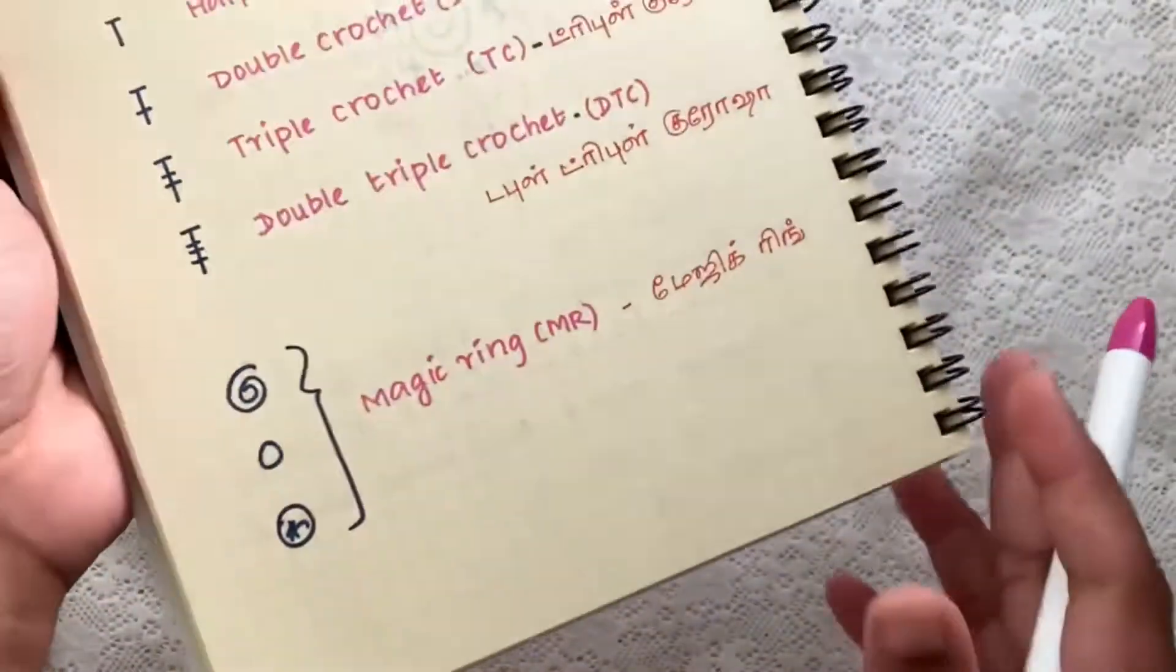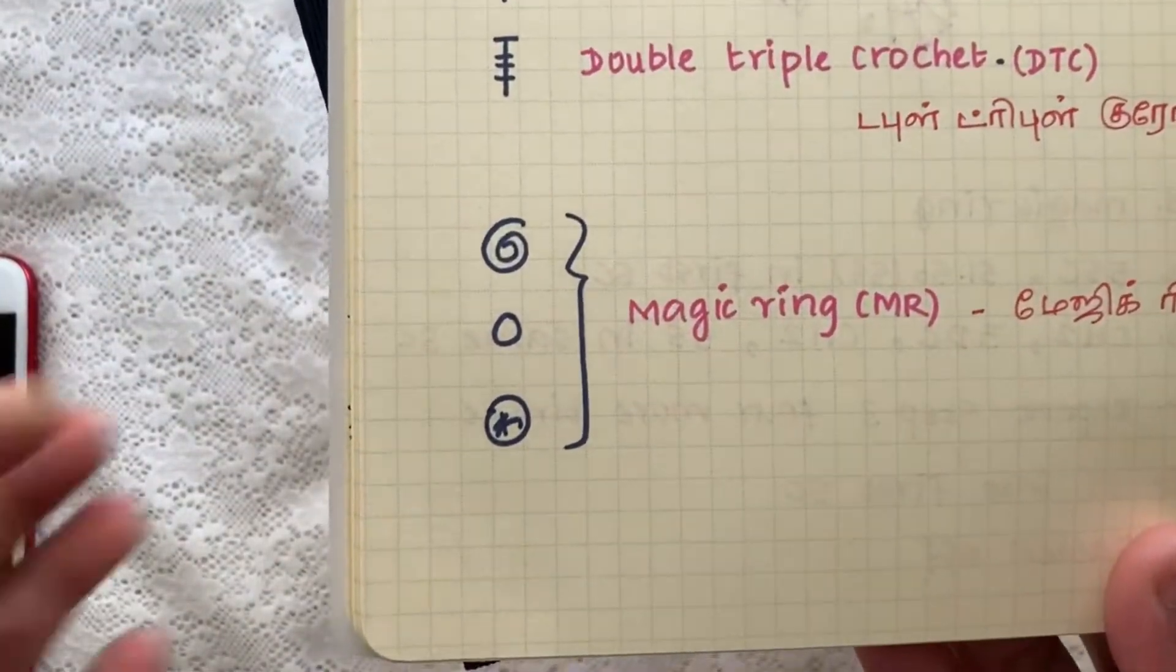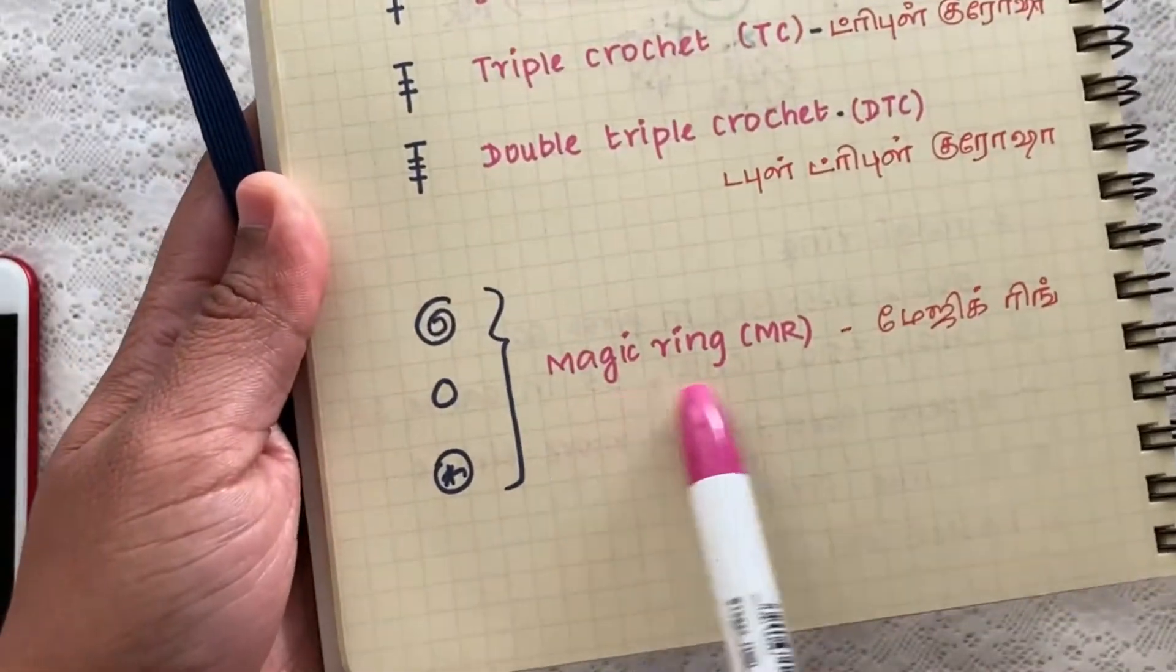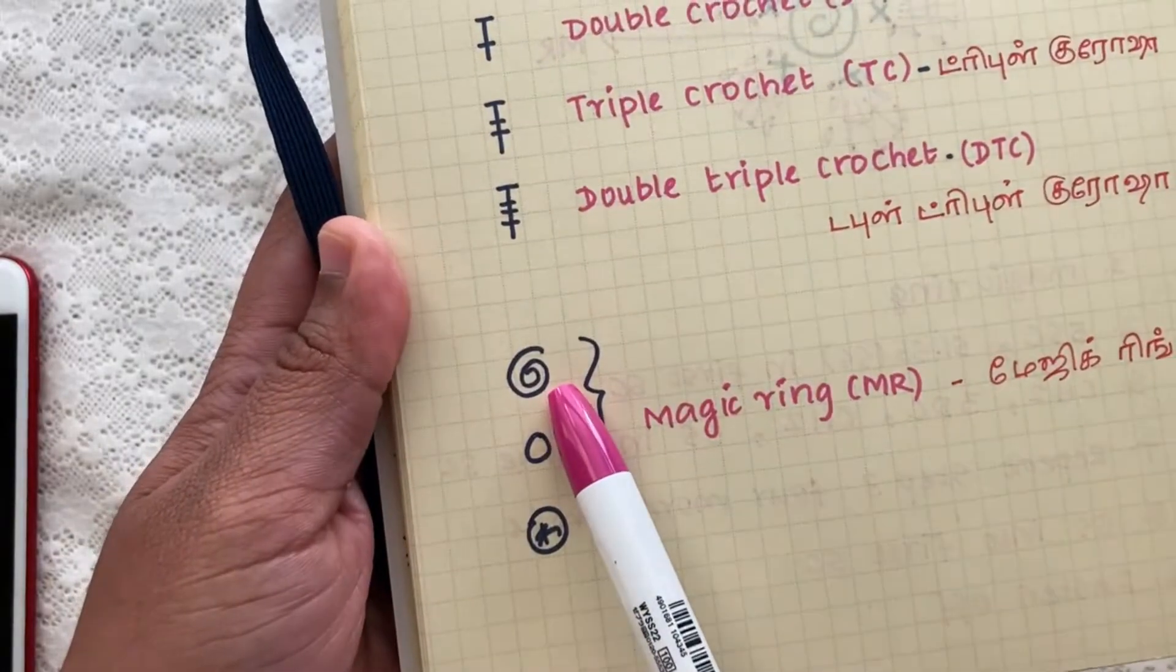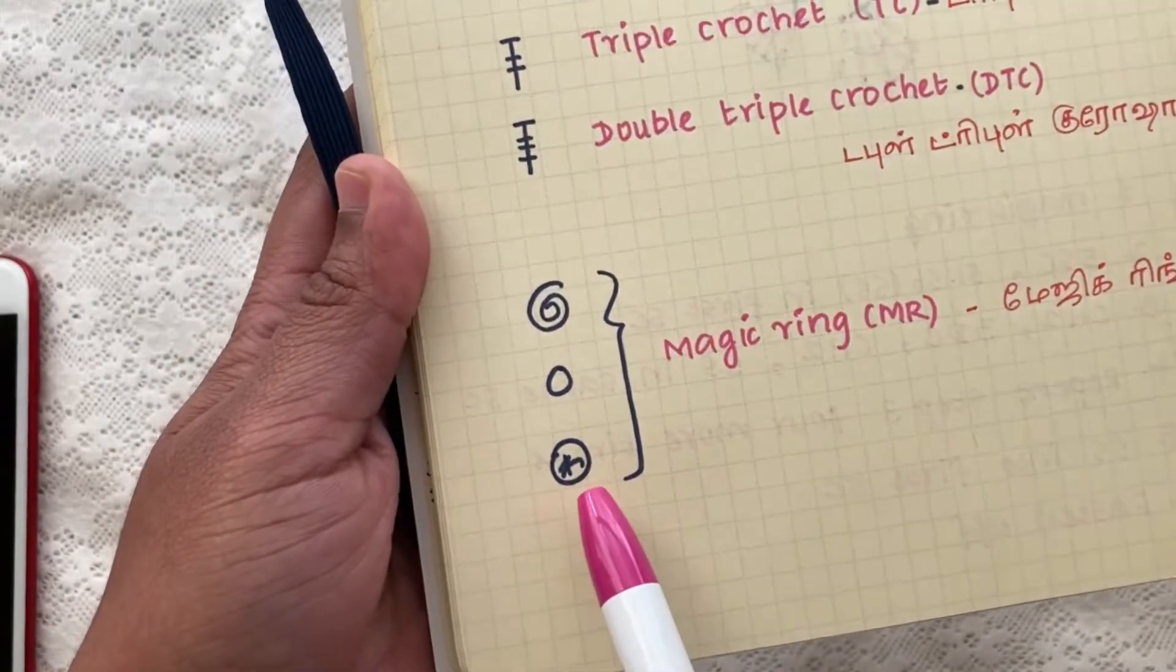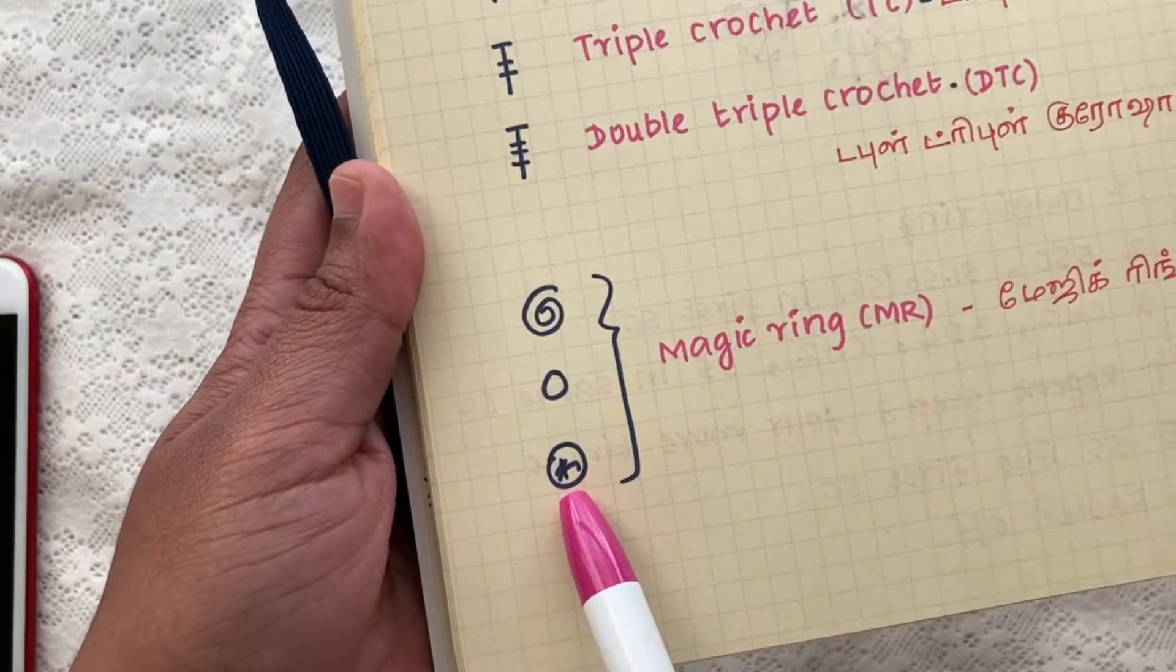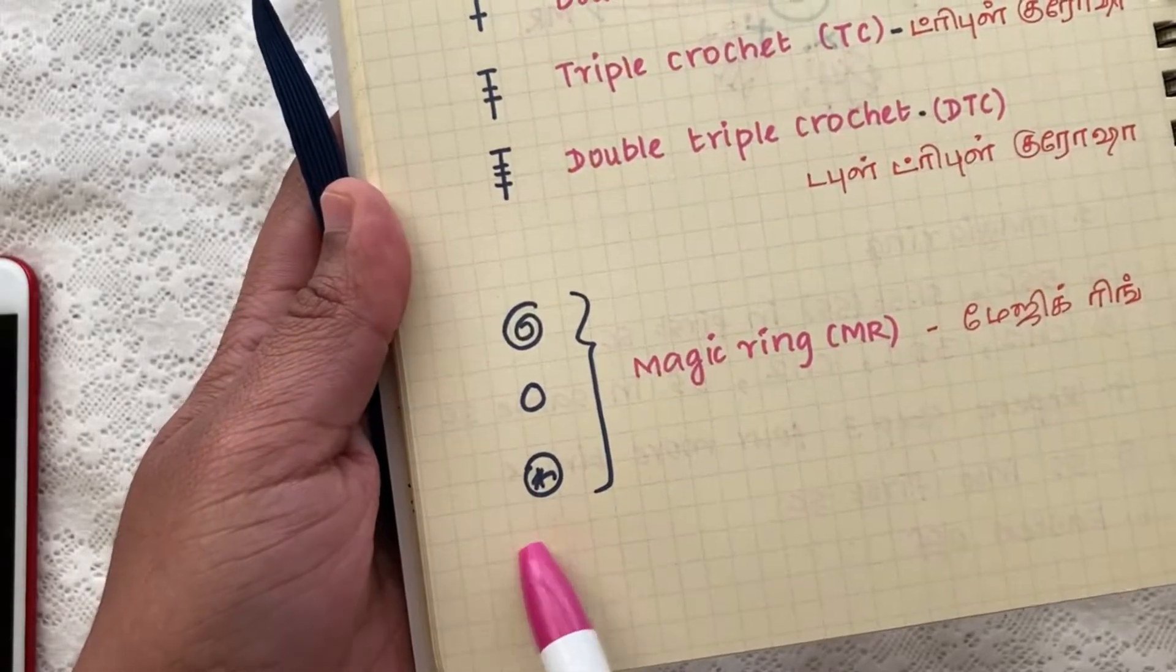And the main thing that we use in the patterns is the magic ring or magic circle, however you call it. This can be represented by this symbol - a spiral or a circle, or a circle with a Japanese symbol. This Japanese symbol is WA and you can find it in most of the Japanese patterns.